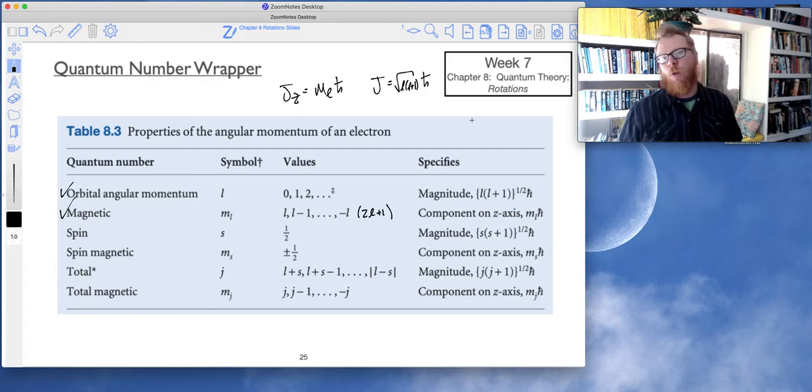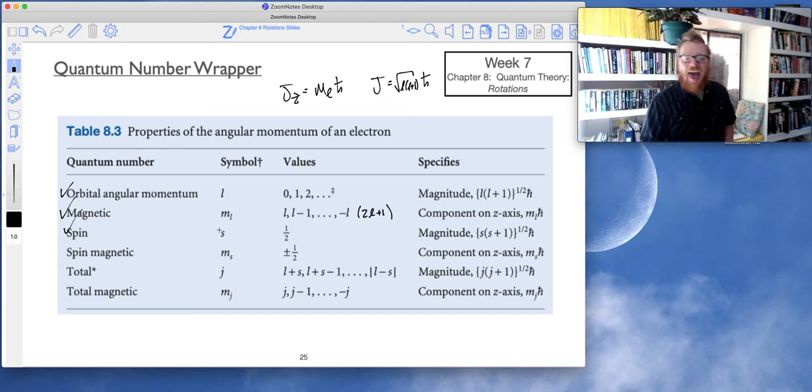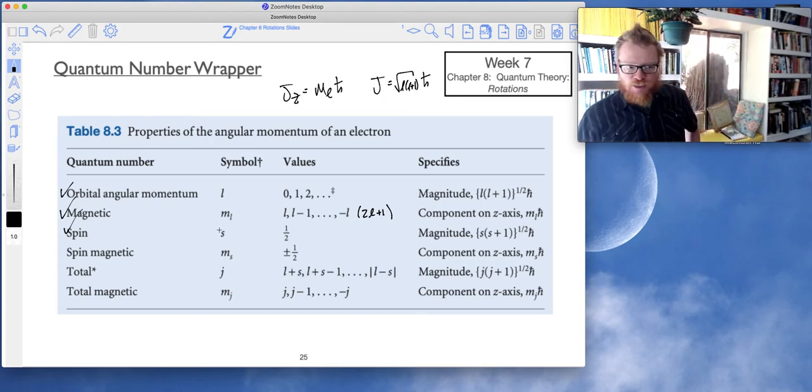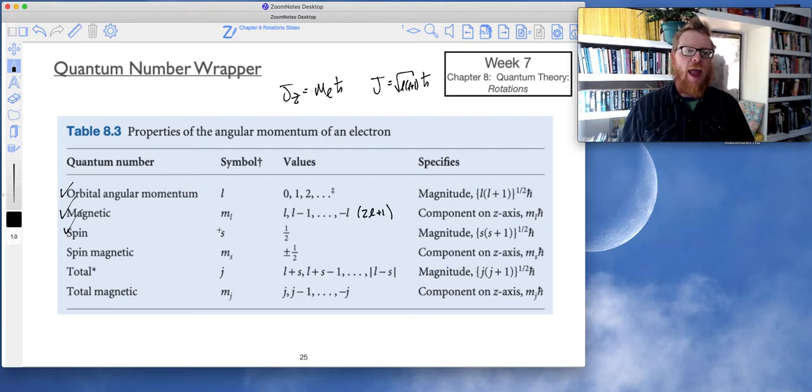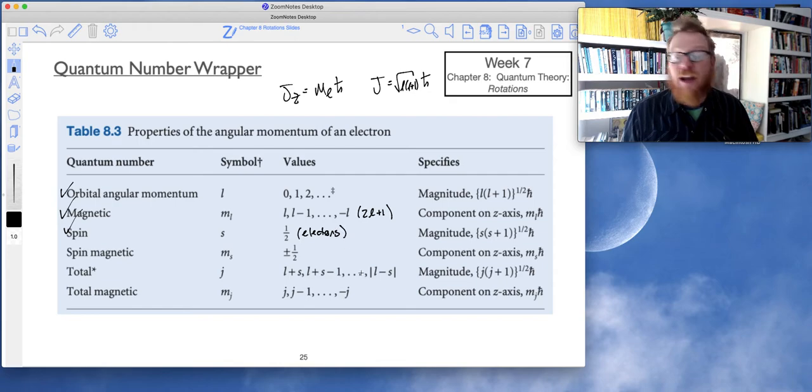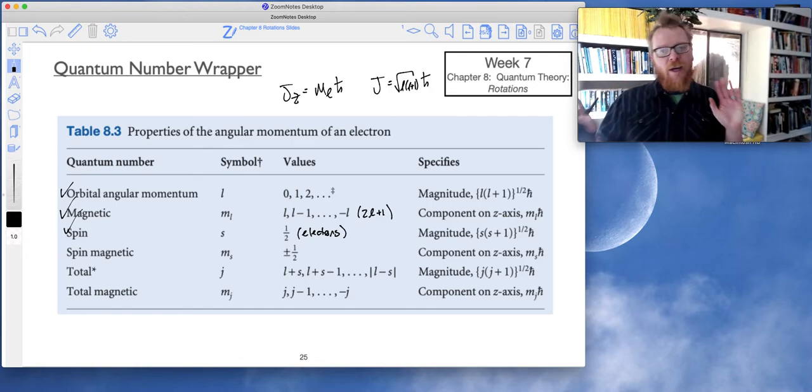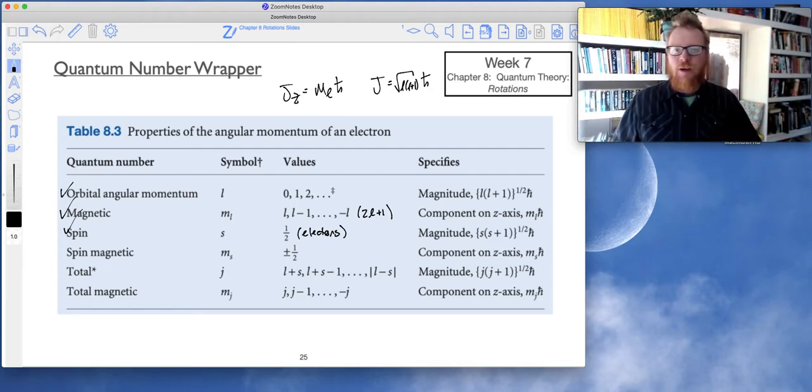What about spin? S is technically the spin quantum number and for electrons that number is one half. As we go a little bit further down the rabbit hole we'll talk about spin quantum numbers for photons, but that's all that we're going to do in this class. We're not really going to get heavy into the particle physics stuff.